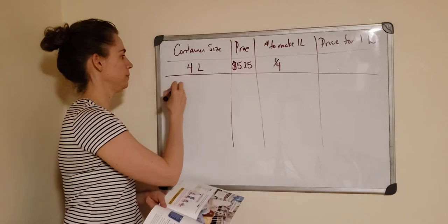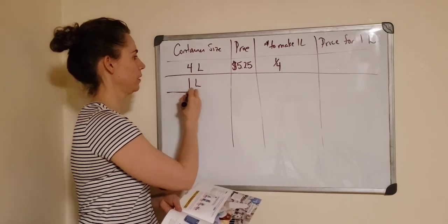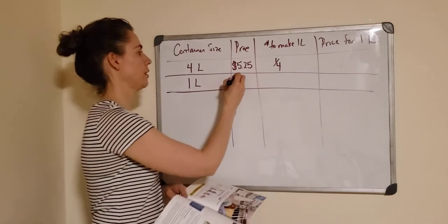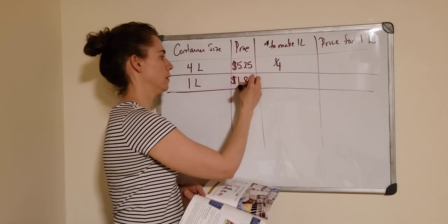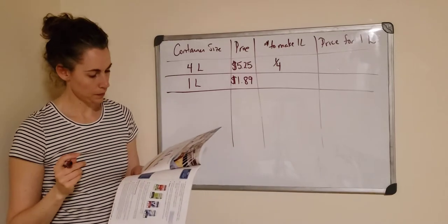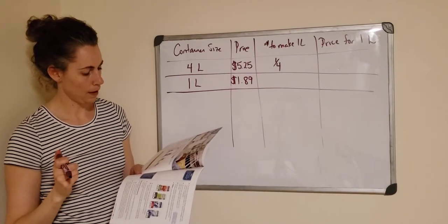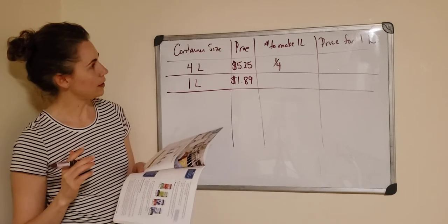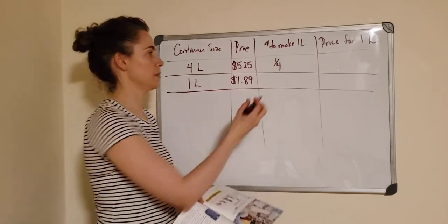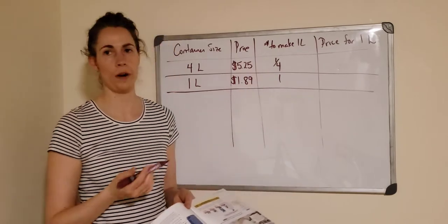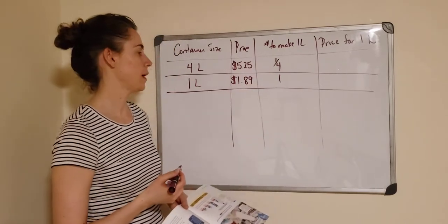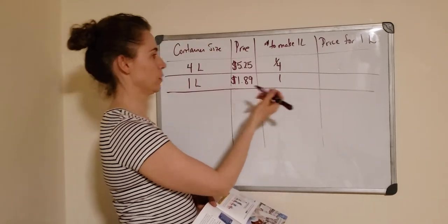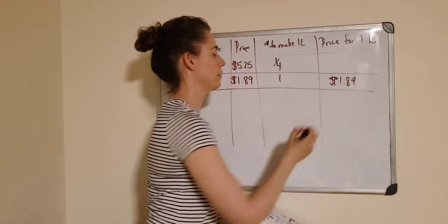Next one is one liter in container size and it costs $1.89. Number to make one liter - it already is, right? That is one liter. So just one of it would be one liter. This one's easy. How much would one liter be? They told us right here, it's $1.89.